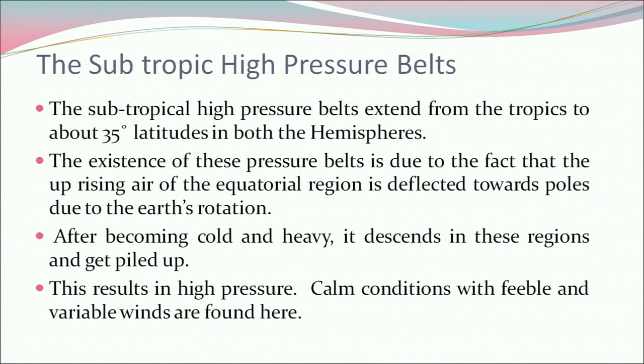The subtropical high pressure belt extends from the tropics to about 35 degrees latitude in both hemispheres. The existence of these pressure belts is due to the fact that the uprising air of the equatorial region is deflected towards the poles due to the earth's rotation. After becoming cold and heavy, it descends in these regions and gets piled up, resulting in high pressure. Calm conditions with feeble and variable winds are found here.